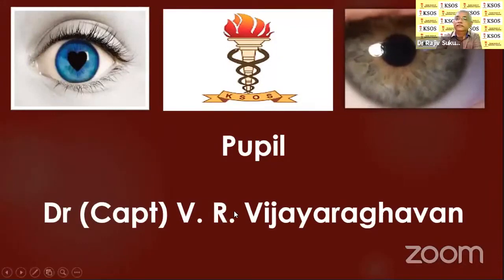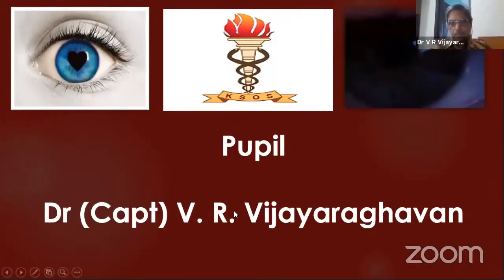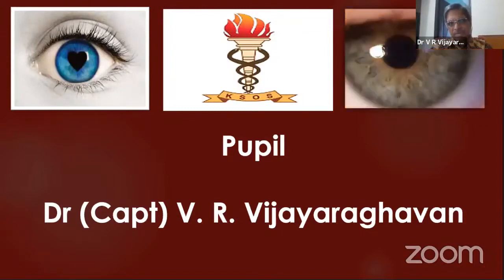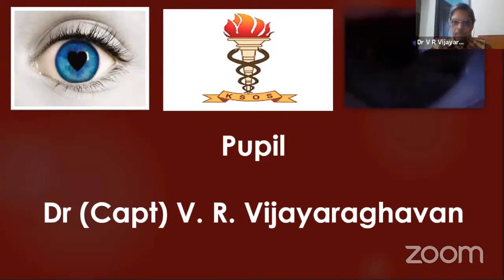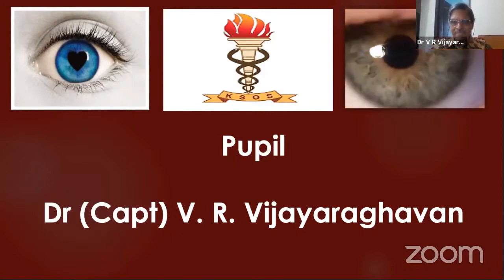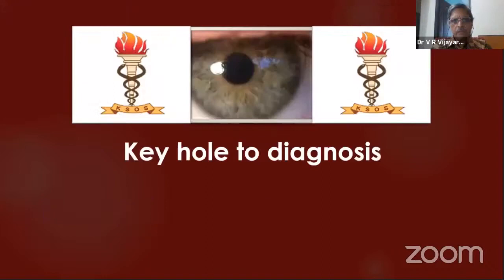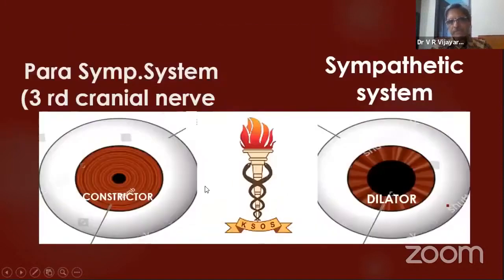Everyone knows that the pupil is an aperture in the center of the iris. Naturally, you can get so many informations from the examination of the pupil, because it has got direct concern with the visual pathway mostly up to the optic tract, and can give us a lot of clues about retinal problems also. That's why we normally call it the keyhole to your diagnosis.